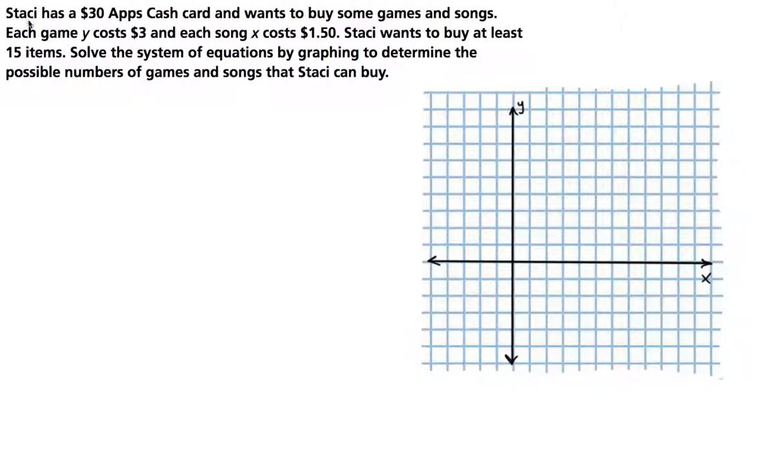The problem states that Stacey has a $30 Apps Cash card and wants to buy some games and songs. Each game Y costs $3 and each song X costs $1.50. Stacey wants to buy at least 15 items. Solve the system of equations by graphing to determine the possible numbers of games and songs that Stacey can buy.